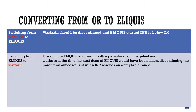When converting between warfarin and Eliquis: when switching from warfarin to Eliquis, warfarin should be discontinued and Eliquis started when the INR is below 2. When switching from Eliquis to warfarin, Eliquis affects the INR, so the initial INR measurement during transition may not be useful for determining the appropriate warfarin dose. One approach is to discontinue Eliquis and begin both a parenteral anticoagulant and warfarin at the time the next dose of Eliquis would have been taken, then discontinue the parenteral anticoagulant when the INR reaches an acceptable range.